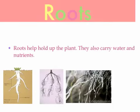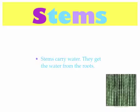Roots help hold up the plant. They also carry water and nutrients. Stems carry water — they get the water from the roots.